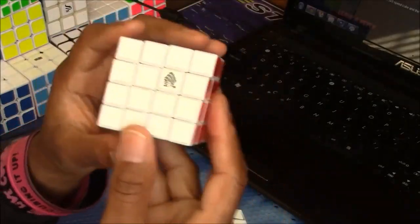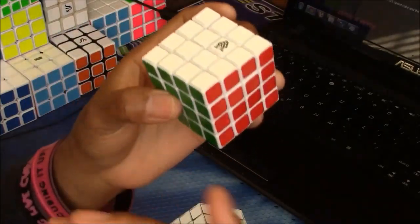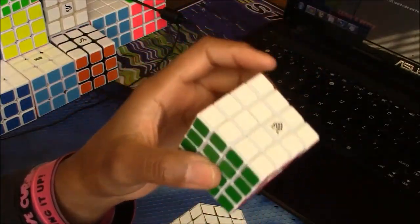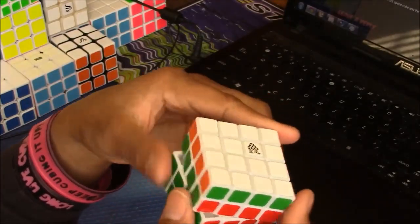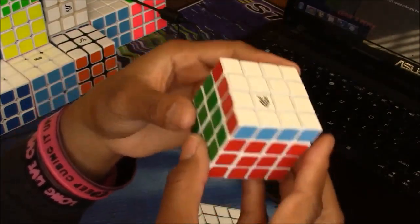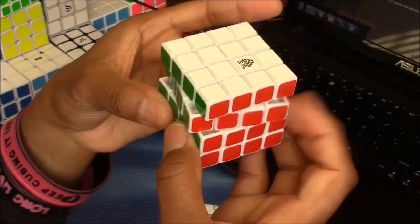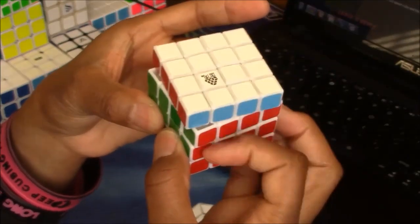Worst cube is the Witeden mini 4x4. Well, I'm not too sure if it's the worst cube, but it may be the worst cube I have. Too many explosions, too many lockups, and just this layer moving by itself.